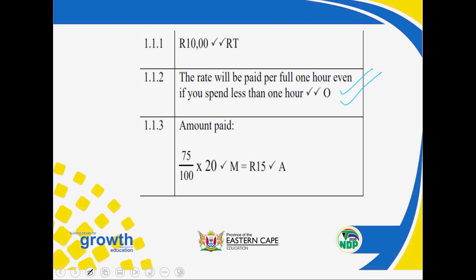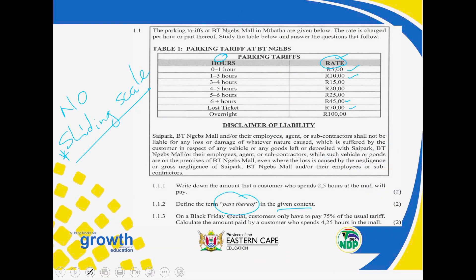Write down the amount that a customer who spends 2.5 hours at the mall will pay. Remember, the word 'write down' is an action verb — you don't need to do a calculation. 2.5 hours is actually 2 hours and 30 minutes. You go back to the table and look — where is 2 hours? We have one hour to three hours, so 2 hours 30 minutes falls between one and three hours. You go to the right-hand side, find the rate, and that person is going to pay 10 rand.